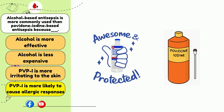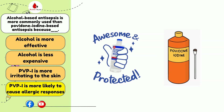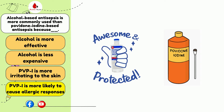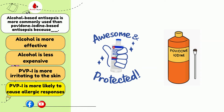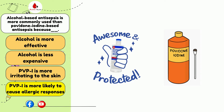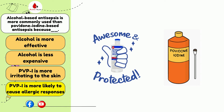Many people are allergic to iodine. In most cases, 70% alcohol is used as an antiseptic before a blood draw. Other antiseptics like chloraprep can be used in place of alcohol if the patient is allergic to alcohol or in cases of blood alcohol level tests.